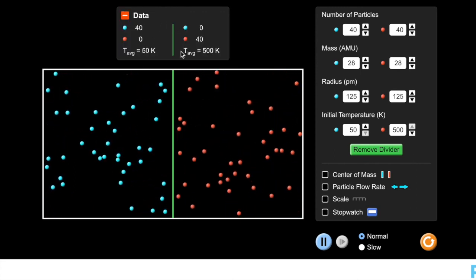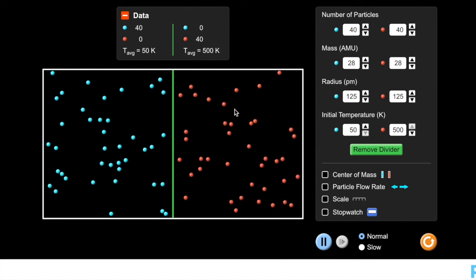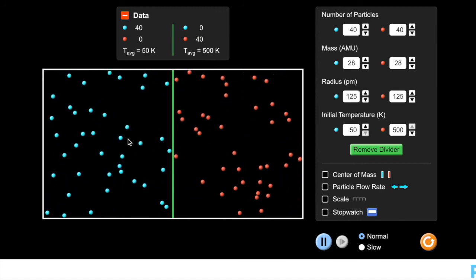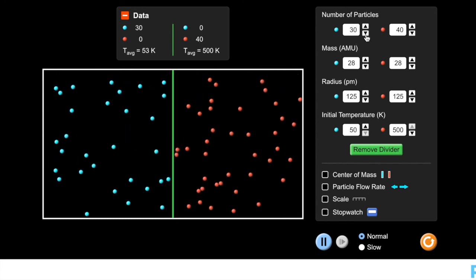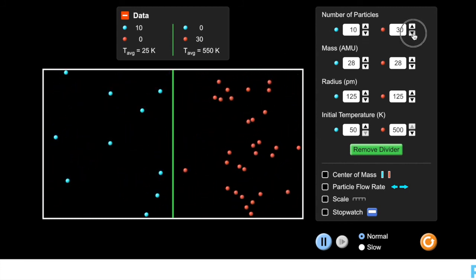I've got this handy-dandy little guy right here that'll show me the data. It shows me the average temperature on this side, the average temperature on this side, and the number of particles on both sides. And for this first exercise, what I want to do is I just want to look at 10 particles on each side and see how this changes.